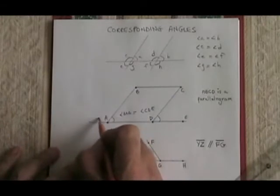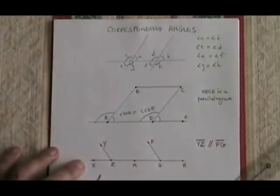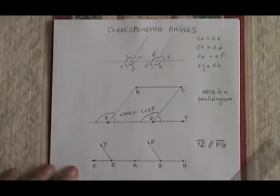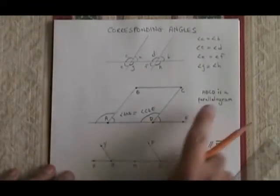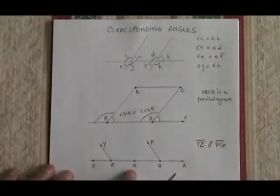It also means that this angle here must be equal to this one here. They are also corresponding. We are justified in coming to these conclusions because we know that ABCD is a parallelogram.